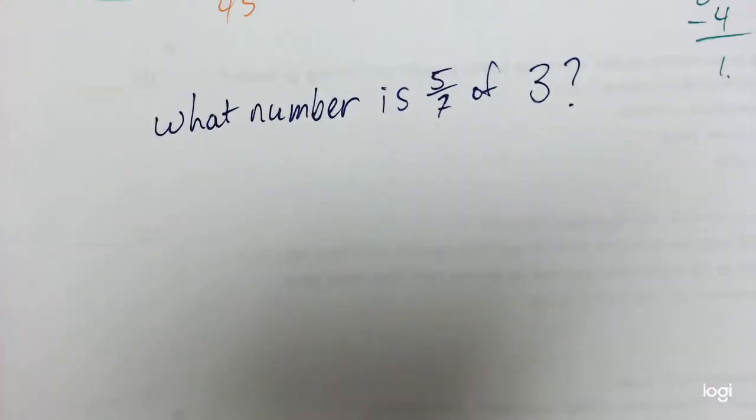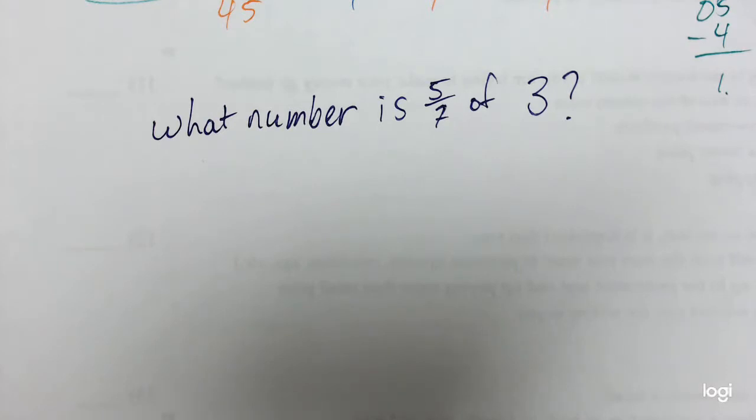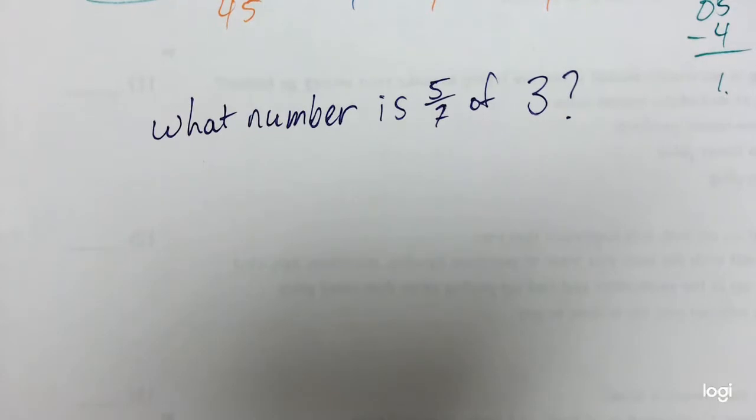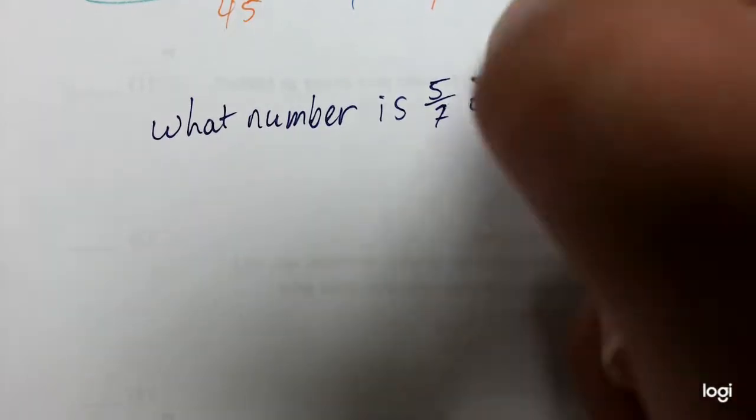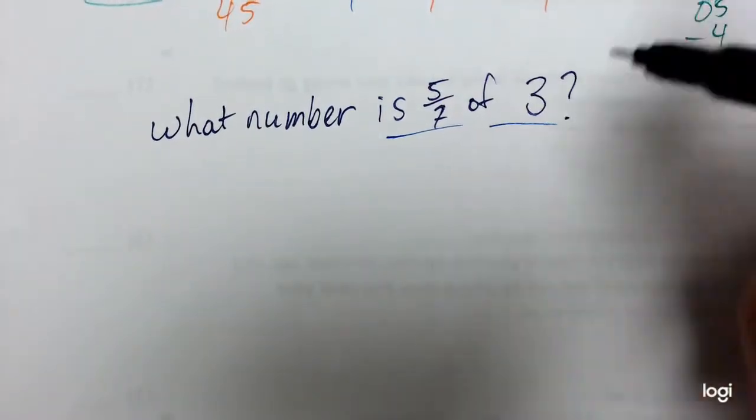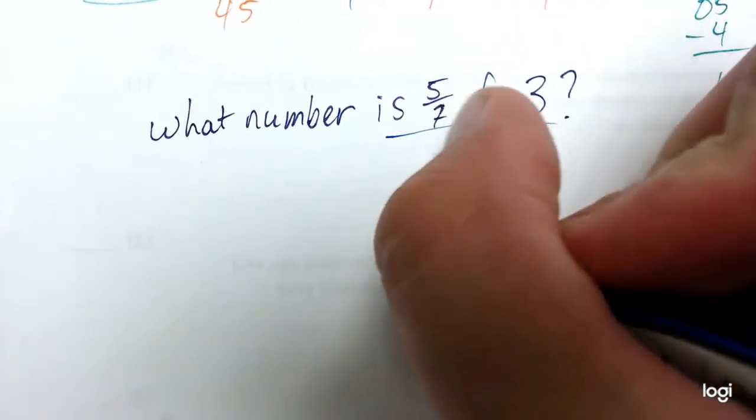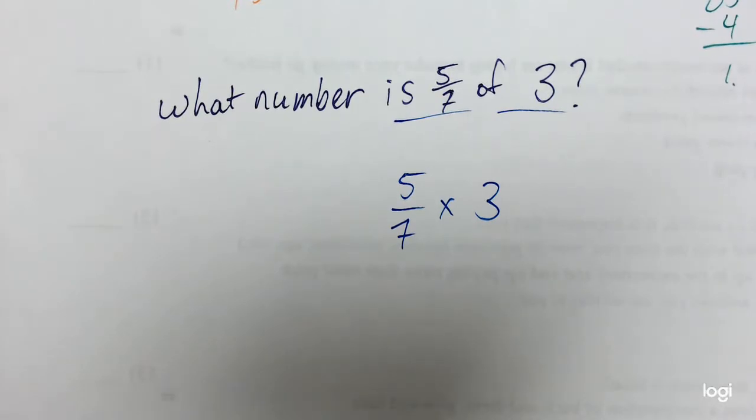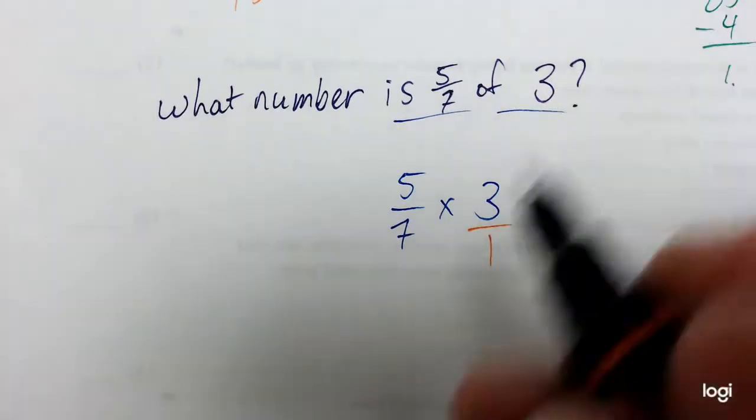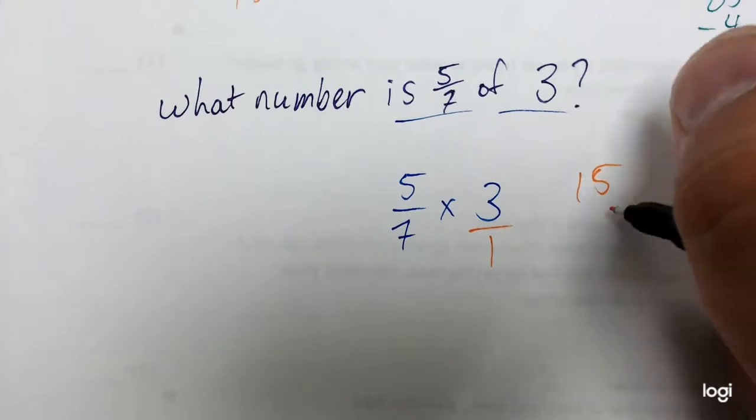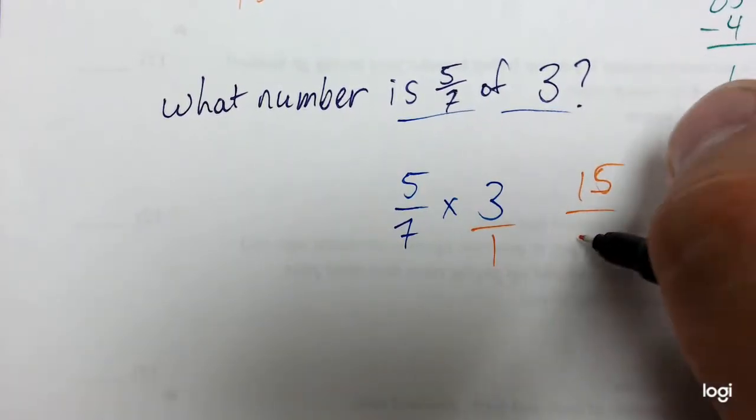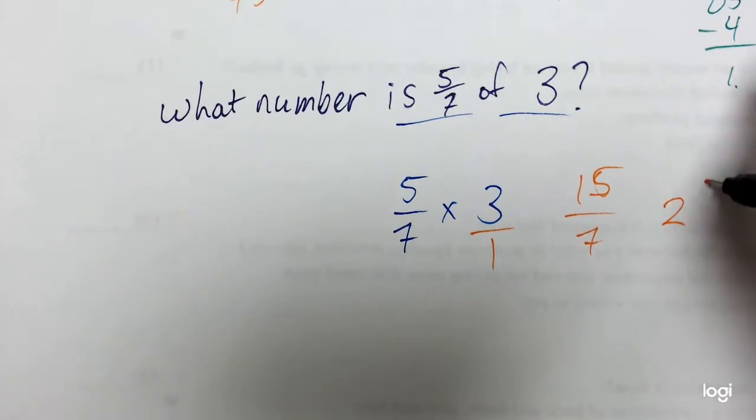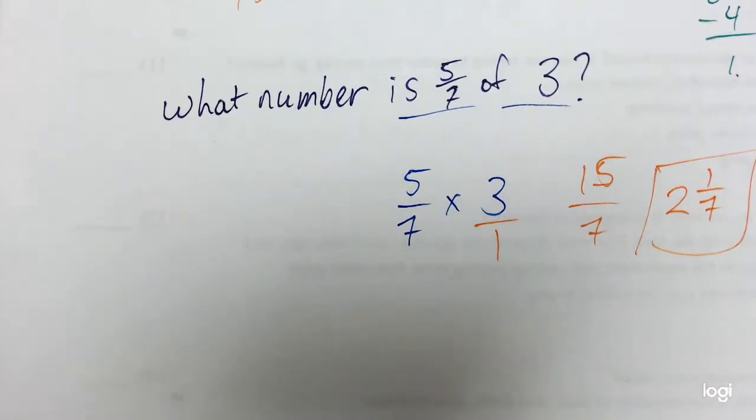All right. We'll do one more just for good measure. If you think you've got it, you can go ahead and stop the video. We'll do one last example though, if you still need a little bit of help. Let's see here. 5/7 of 3. My is number is 5/7. My of number is 3. So I'm going to multiply 5/7 times 3. 3 is a whole number, so I've got to write it as a fraction. Put it over 1. 5 times 3 is 15. And 7 times 1 is 7. 15 over 7. 7 goes into 15 two times with 1 left over. So 2 and 1/7 is my final answer.